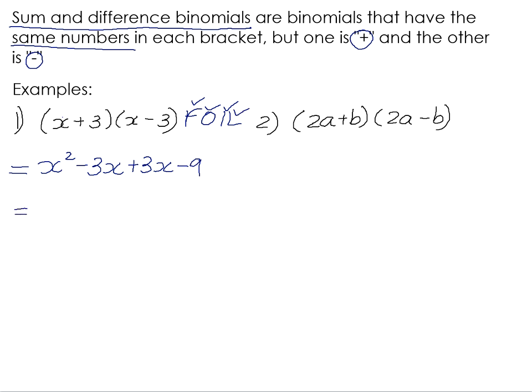What happens here, because these brackets were the same but the one was addition and the other one was subtraction, is that our middle terms are exactly the same with opposite signs. And what happens then, when we have exactly the same thing but the one is a plus and the other is a minus, is that they add up to zero. So our final answer here is x squared minus 9.